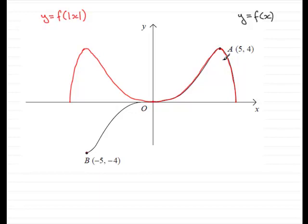So what has happened is that this point here a got mirrored or reflected in the y-axis to this point here. So I feel that we should call that a prime. And what would its coordinates be? It would be minus 5, 4.